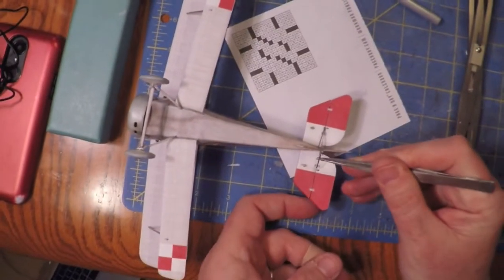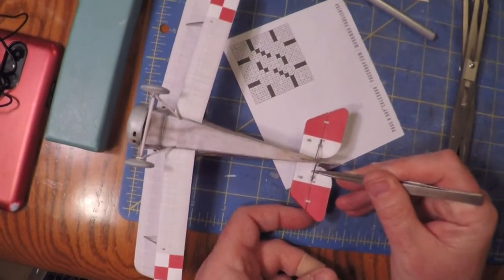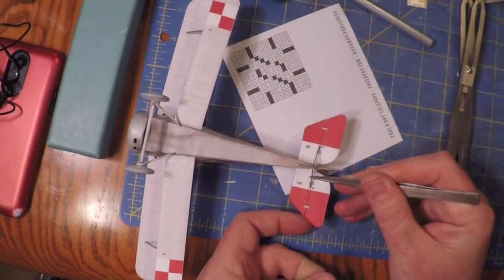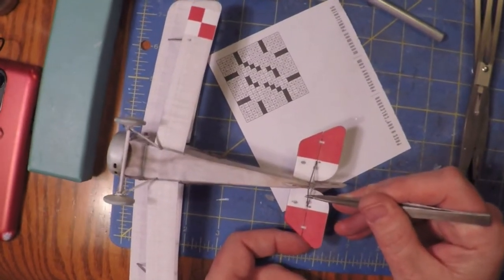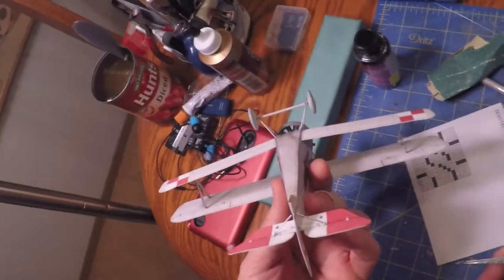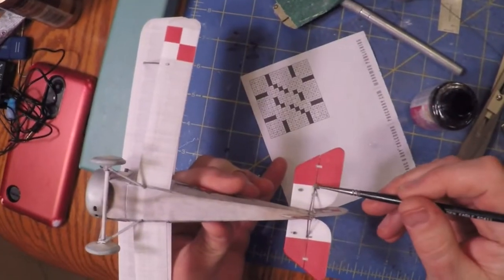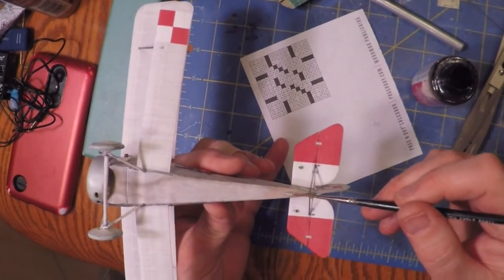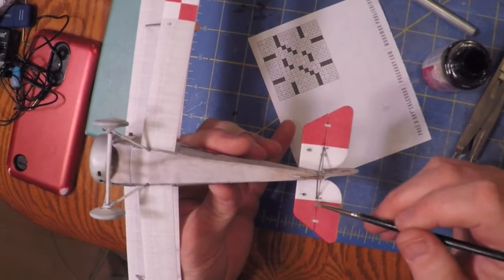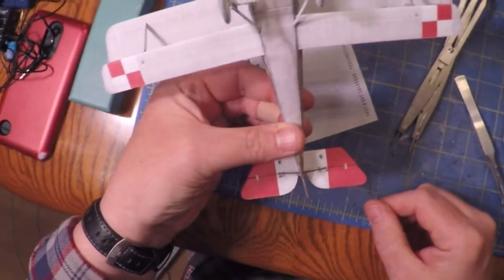Then I attached it with some thick super glue on either end and put it where it's supposed to be. Sometimes I put little grooves in there so they fit better; this time I was able to glue it directly on. Hit them with a little accelerator and now we've got nice connections on the stabilizer.